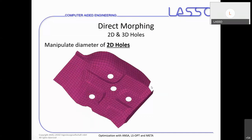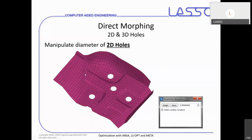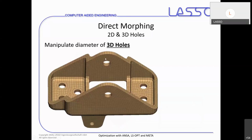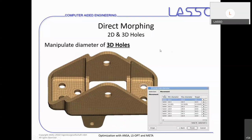There are some specific functions concerning morphing of holes — for example, changing the diameter of 2D holes. You can apply this not only on the first row of elements (the washer) but on arbitrary ones. The same is possible for 3D holes — in older versions called tubes — to separate them from 2D holes in a shell mesh. For 3D holes, we can identify the holes first and then change their diameters.